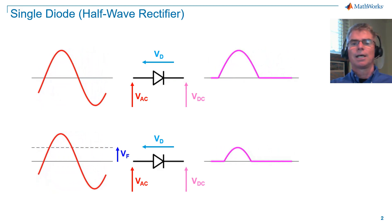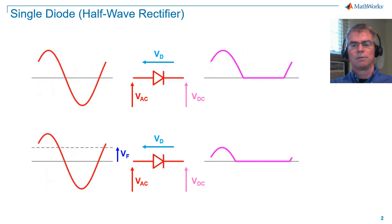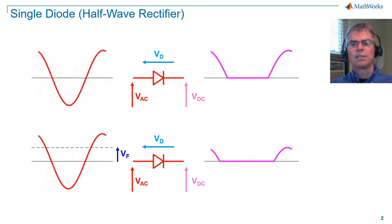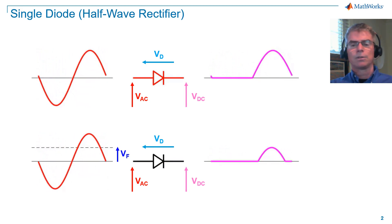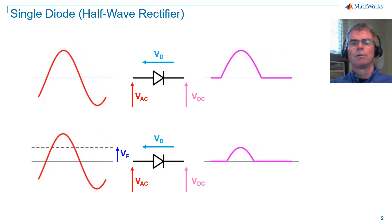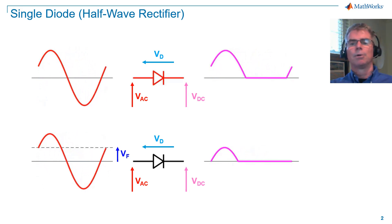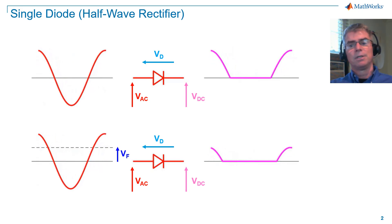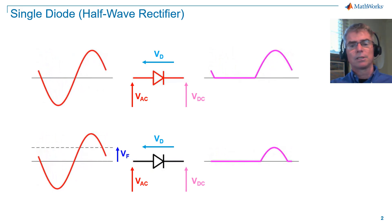In practice, a diode has what is known as a forward voltage, VF, which dictates at what positive voltage threshold the diode will conduct. At the top, I've set forward voltage to zero, and on the bottom, I've set forward voltage to 50% of the peak supply voltage.